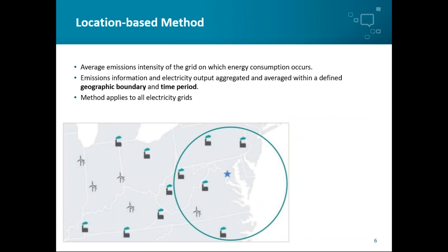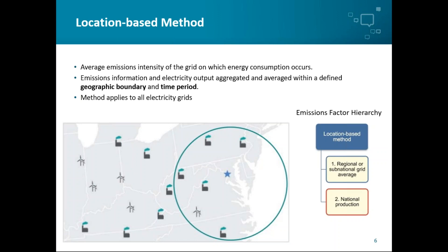Before discussing the market-based method, it's worth quickly explaining the location-based method. Location-based emissions reporting is the traditional way companies measure and report their scope 2 emissions. Emissions factors are calculated for regions or nations based on the average emissions of all energy sources put onto the grid, using a defined geographic boundary and time period. This includes all sources of generation — fossil fuels, nuclear, and any renewable energy sources within that geographical area. The emissions factor hierarchy indicates that regional and sub-national emissions factors should take precedence over national emissions factors. The location-based method applies to all electricity grids.